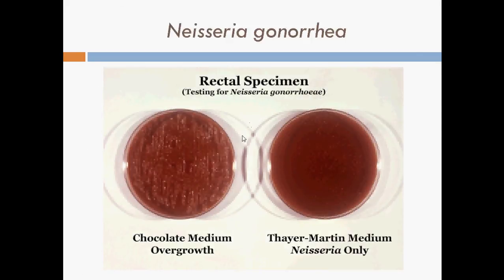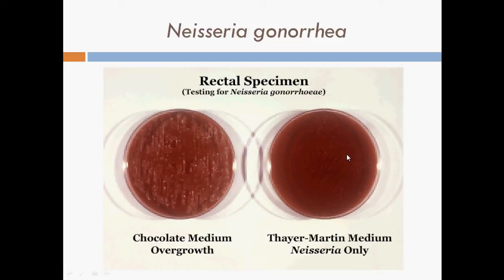Here we have two plates. One is a chocolate medium on which many different types of bacteria are growing. Next to it is the Thayer-Martin media, which only contains Neisseria gonorrhoeae in this case, because Thayer-Martin media is selective for Neisseria gonorrhoeae by suppressing most other bacteria and possibly yeast as well.